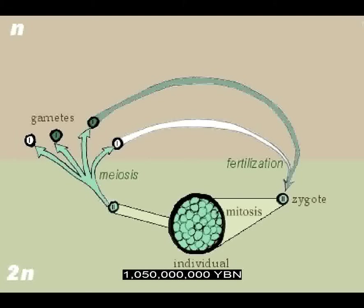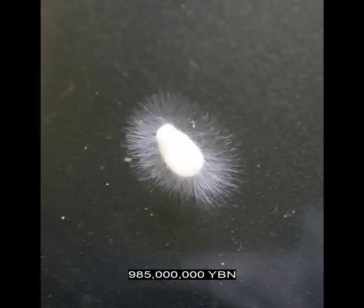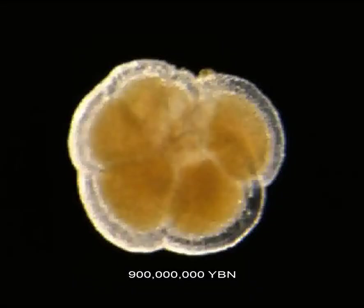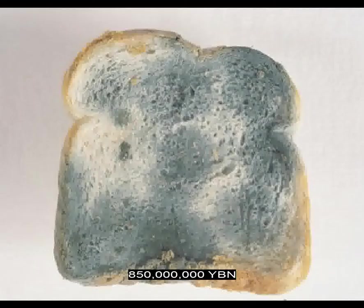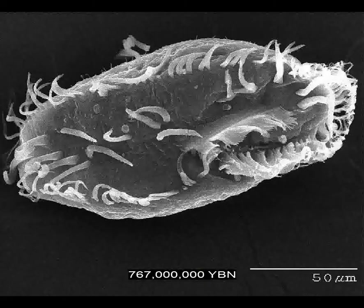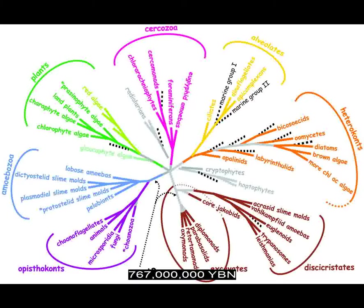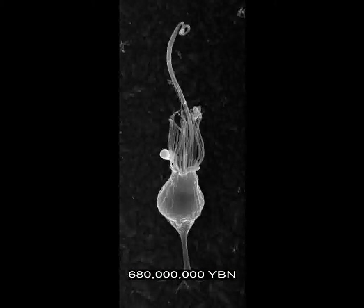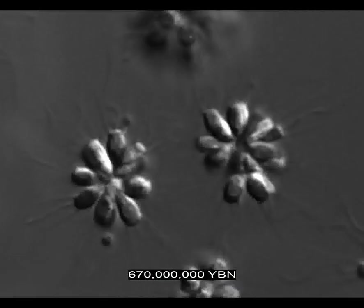Protists rhizaria — ancestor of all radiolaria, foraminifera, and cercozoa. Fungi Zygomycota — bread molds, pin molds. Protists ciliates — paramecium, earliest mitochondria with tubular cristae. Protists Apicomplexa — malaria. Protists choanoflagellates — the closest relative to the animals and may be direct ancestors of sponges. Multicellularity evolves in a free-moving protist, allowing larger free-moving organisms to evolve.